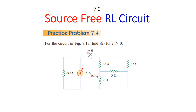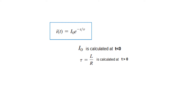This is the question and we have to find current i(t) for t greater than 0. This is the current i(t) through the inductor. If you recall, this is the formula we have learned: i(t) = I0 × e^(-t/τ), where I0 is the initial current calculated at t less than 0, and τ is L divided by R equivalent, calculated at t greater than 0.